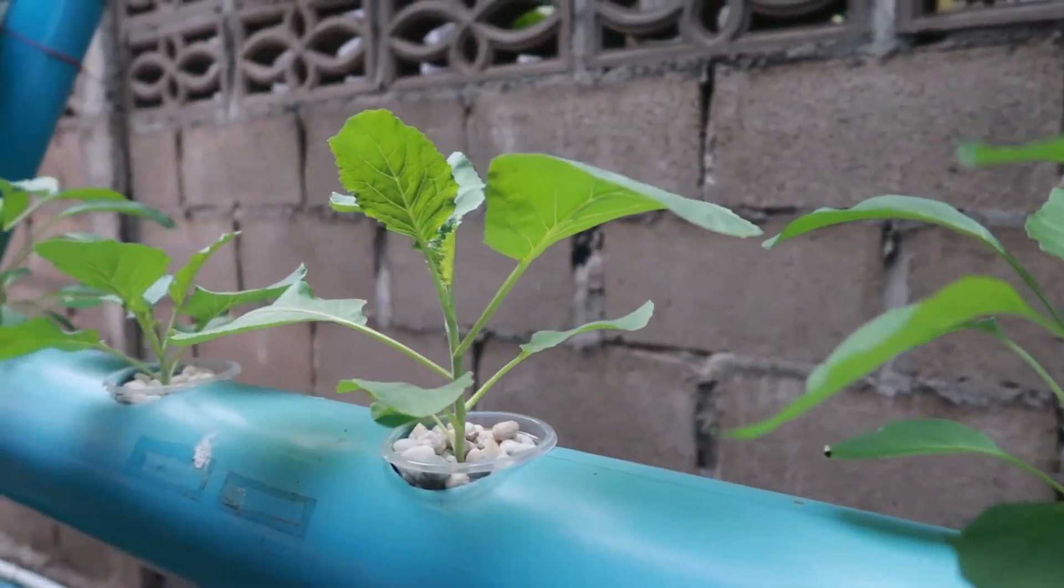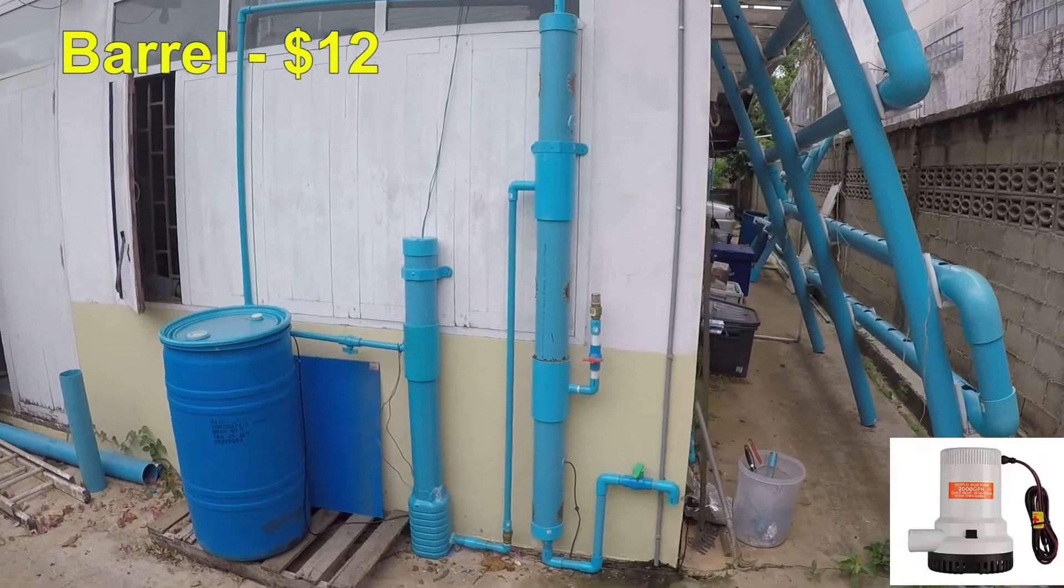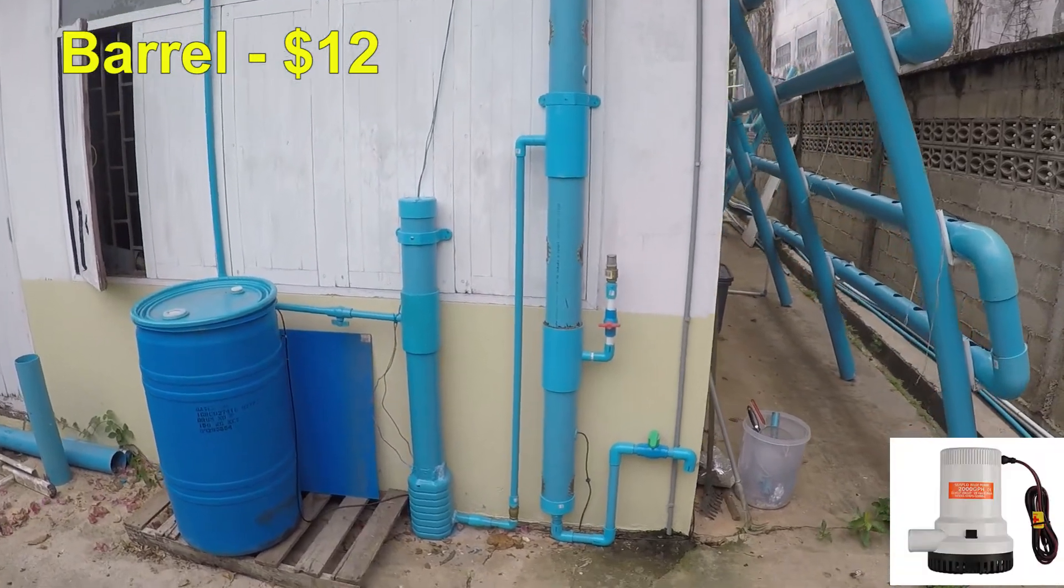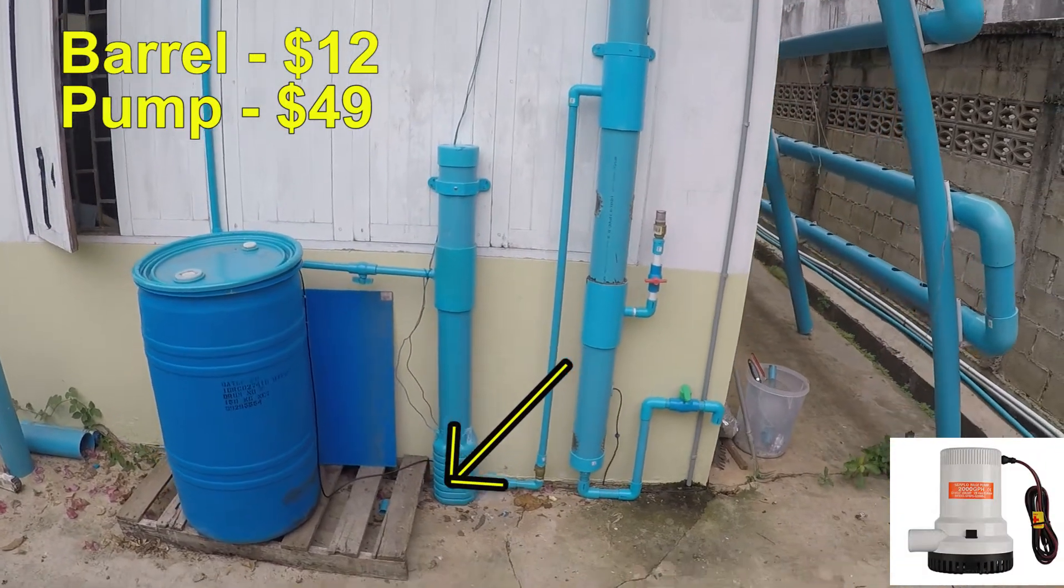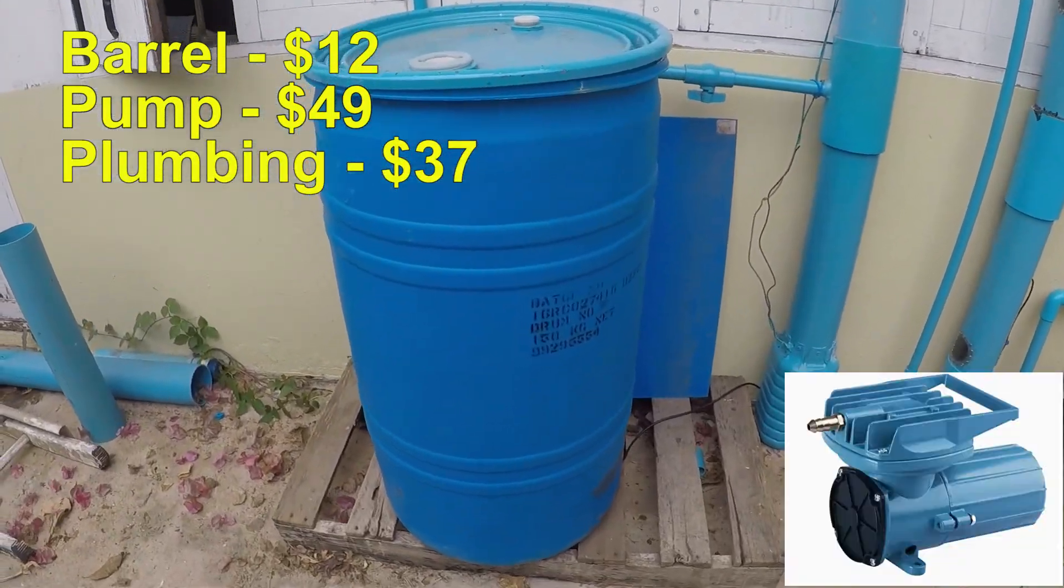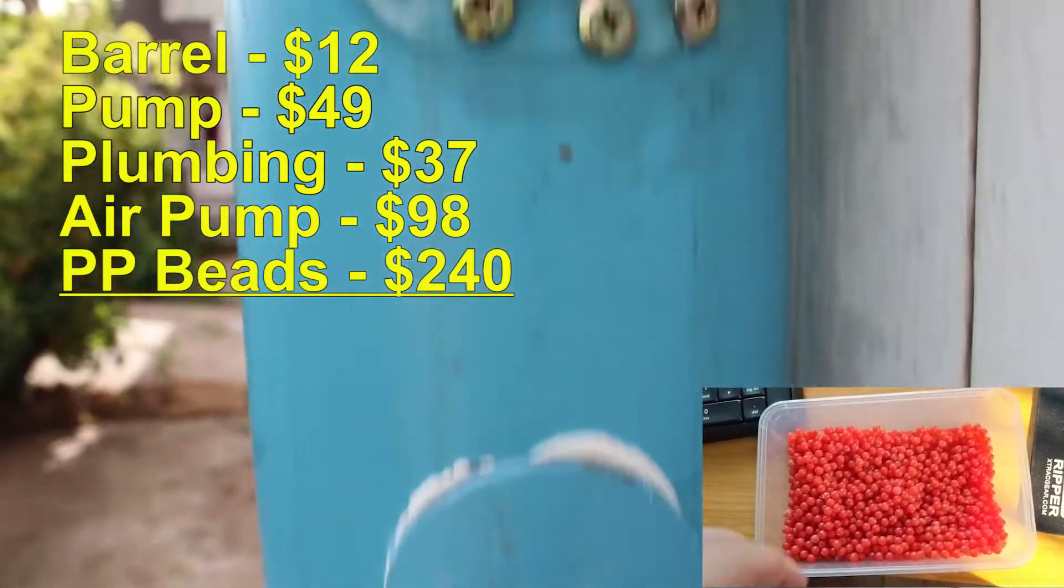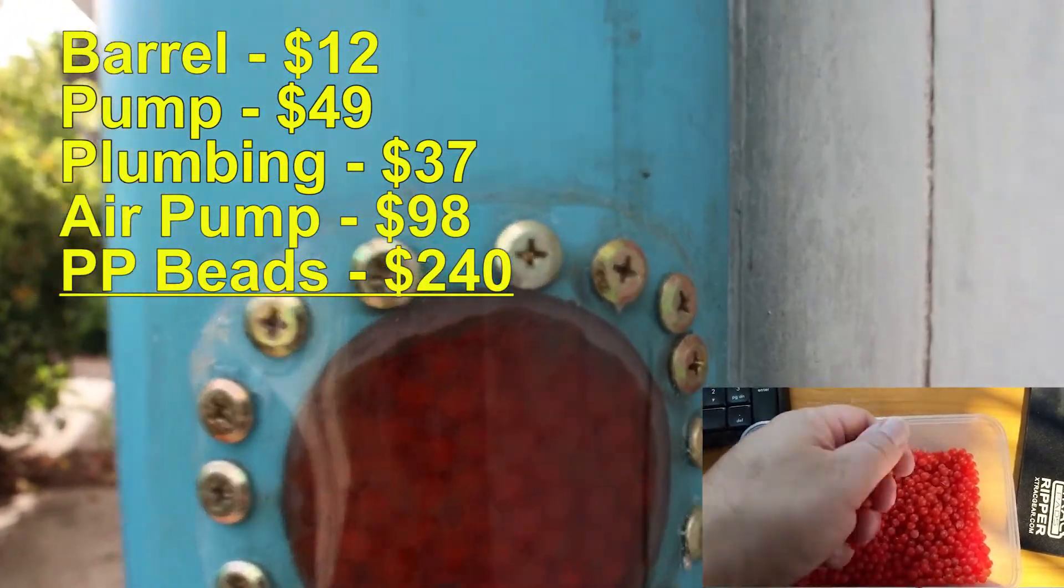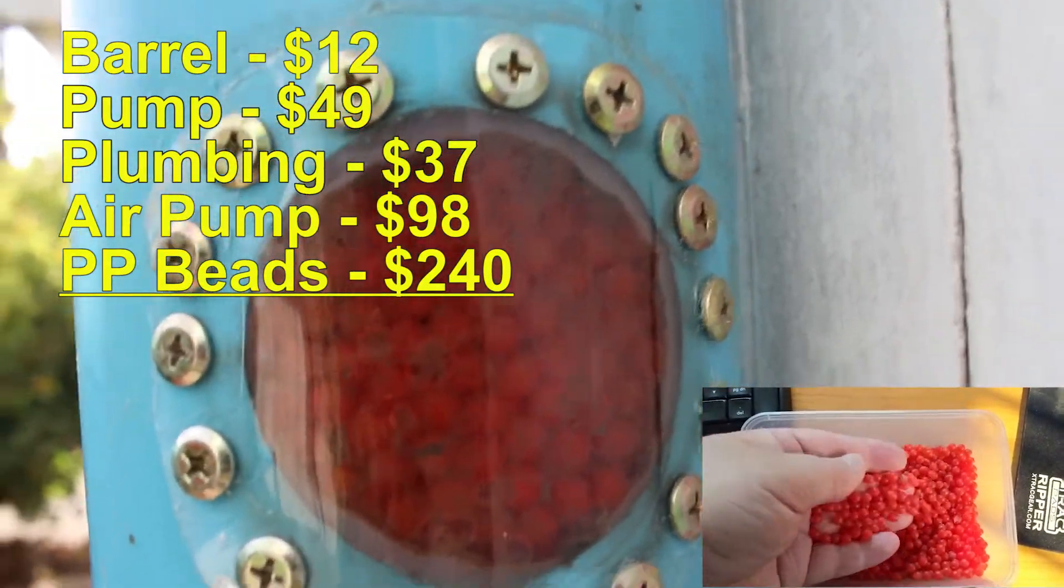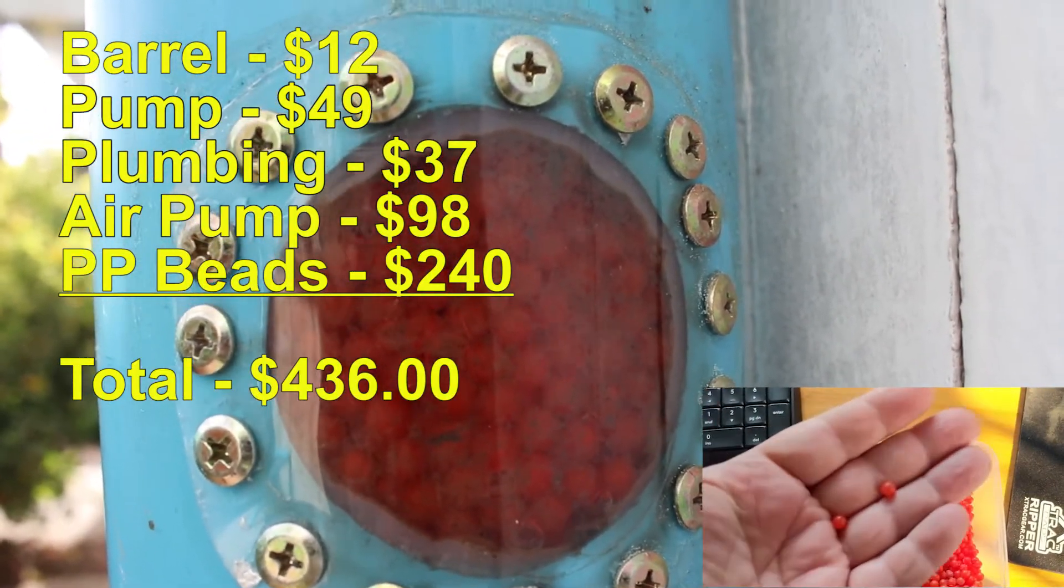Here are the component costs: second-hand plastic barrel, $12; 12-volt sea flow bilge pump, $49; plumbing components, $37; 12-volt aquarium air pump, $98; and 20,000 polypropylene beads, $240, for a total cost of $436 United States dollars.